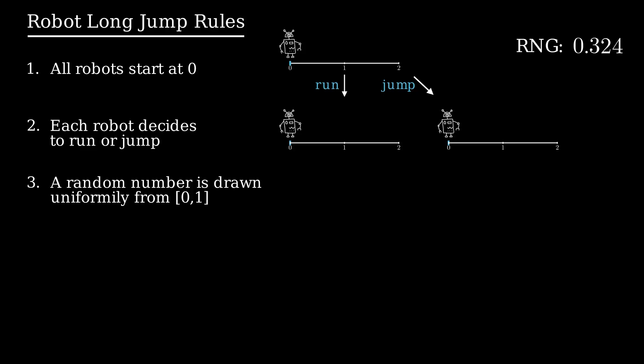If you chose to jump, then you jump that distance and lock in your final score. If instead you decided to run, then you move that distance and now again decide if you want to run or jump.